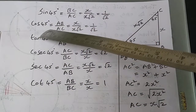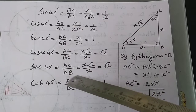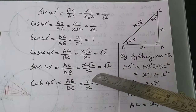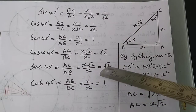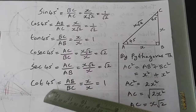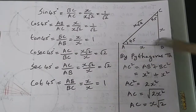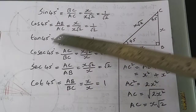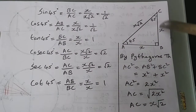Next, secant 45 is the reciprocal of cos 45, that is AC/AB = X√2 divided by X — X's cancel — so sec 45 = √2.